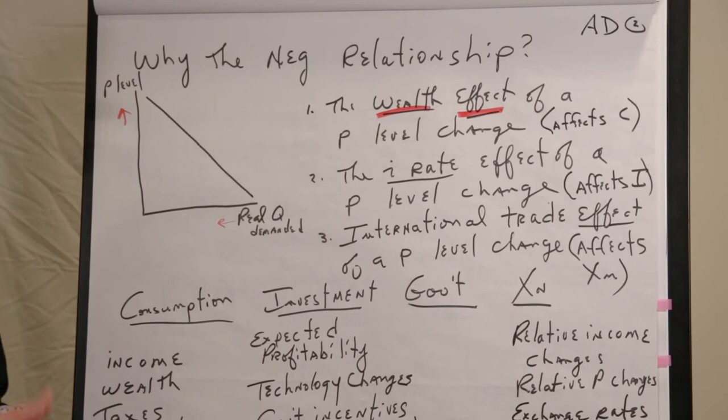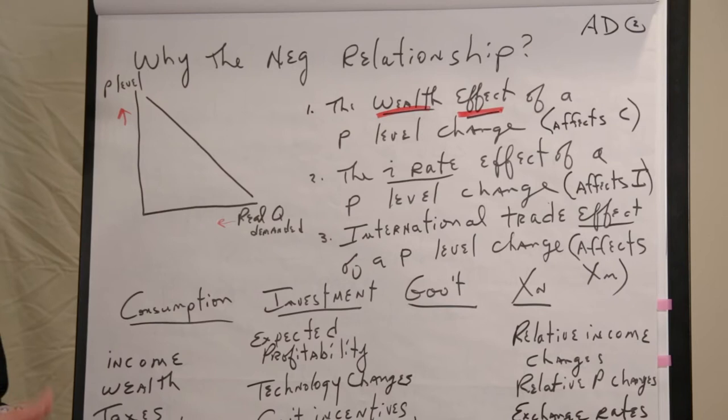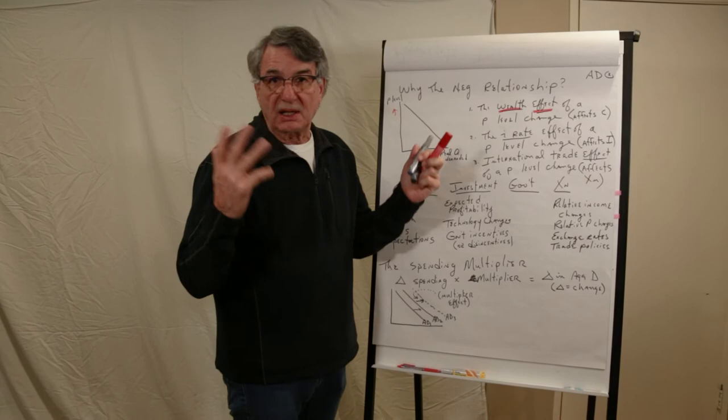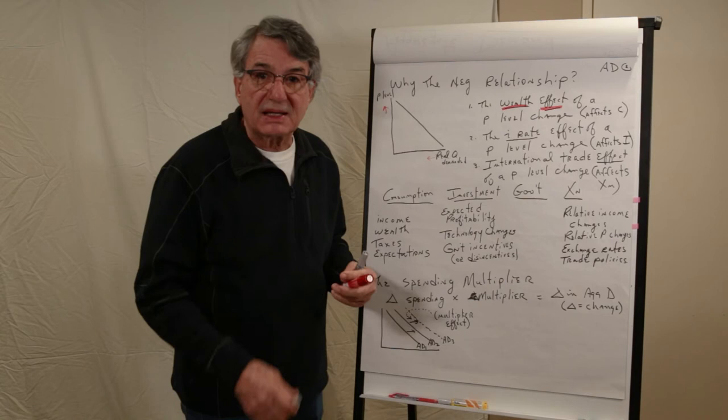Turns out that if the price level goes up, it decreases the real purchasing power of a fixed amount of income. So Harold and Maude have saved all their lives for their retirement years. And sure enough, they finally have saved half a million dollars, and that's what they're going to live on for the rest of their life. And so they start their retirement.